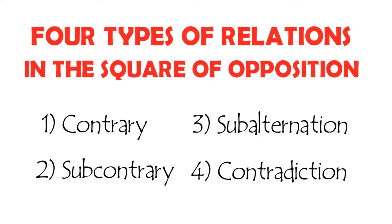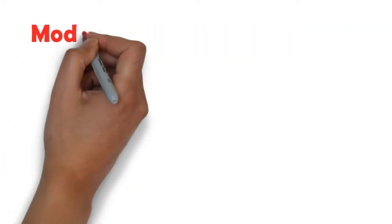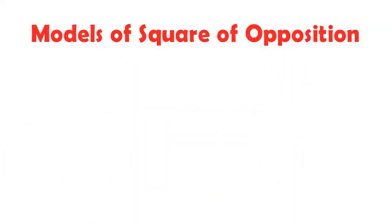In today's whiteboard, I will only discuss one of them, that is, contrary. The other three will be discussed in the upcoming whiteboard editions. But before I proceed, let me show you first the two models of a square of opposition.